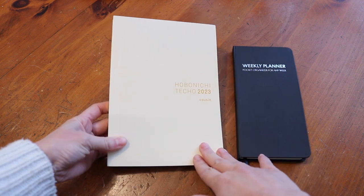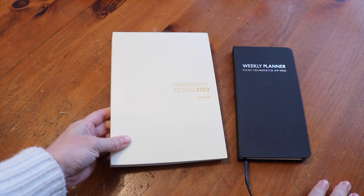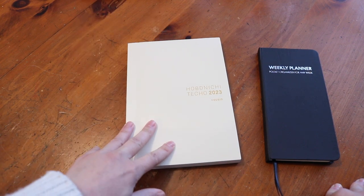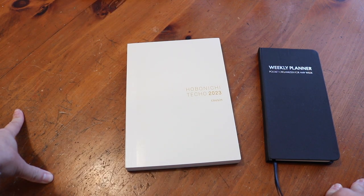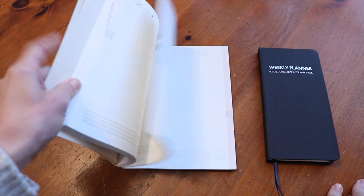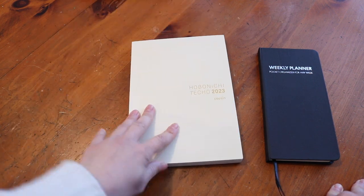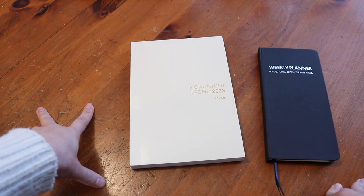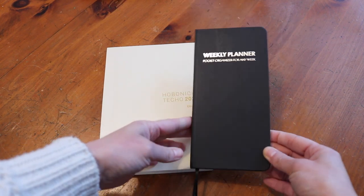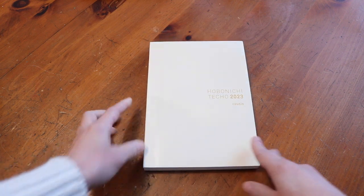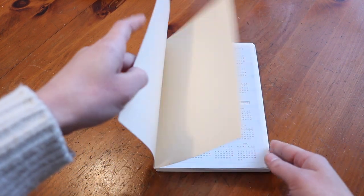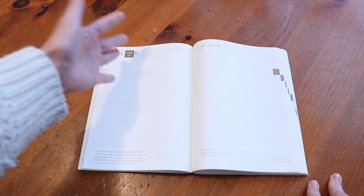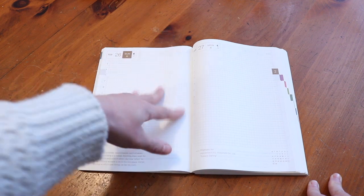The first main planner that I'll be using is the Hobonichi Techo Cousin in the English edition for 2023. I am completely new to Hobonichi and did tons of research. Even until a couple weeks ago, I was not sure what planner I was going to be using. After watching a bunch of videos and asking myself what I want to focus on in terms of my planner priorities, I decided to get the Hobonichi Techo Cousin.